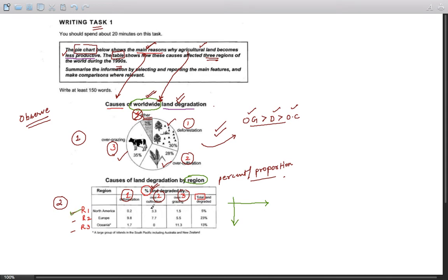Let us proceed. First, let us proceed horizontally. Region one: North America. Can you see something in this row? Let us leave the total land degraded for the moment. Let us look at the first three columns. Yes, most of the destruction of agricultural land is caused by over-cultivation. Though globally it is over-grazing, in North America the main reason is over-cultivation.